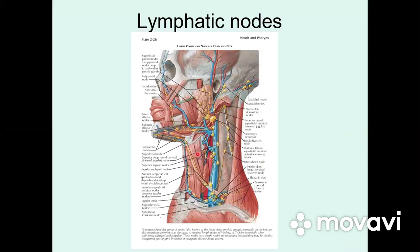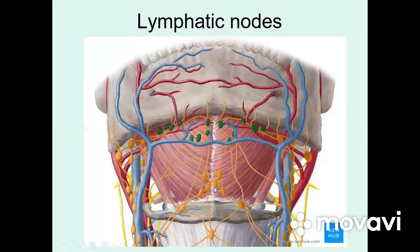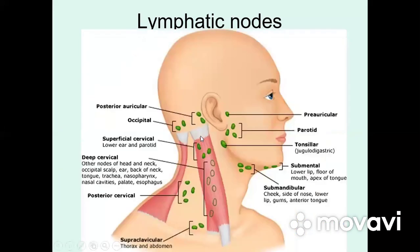There are anterior cervical nodes, which are divided into superficial and deep. There are also lateral lymphatic nodes, submandibular lymphatic nodes, and submental lymphatic nodes.